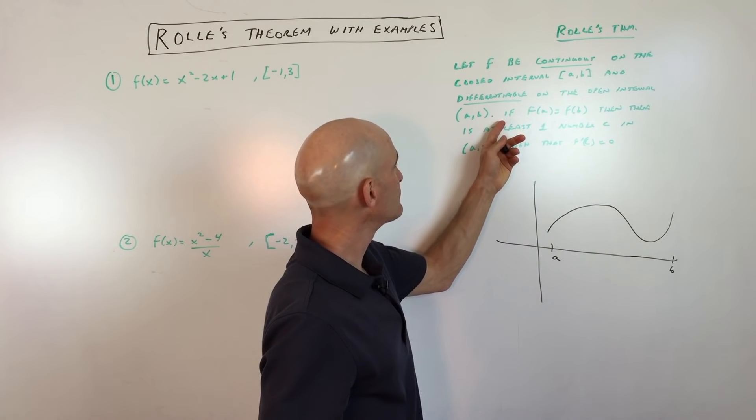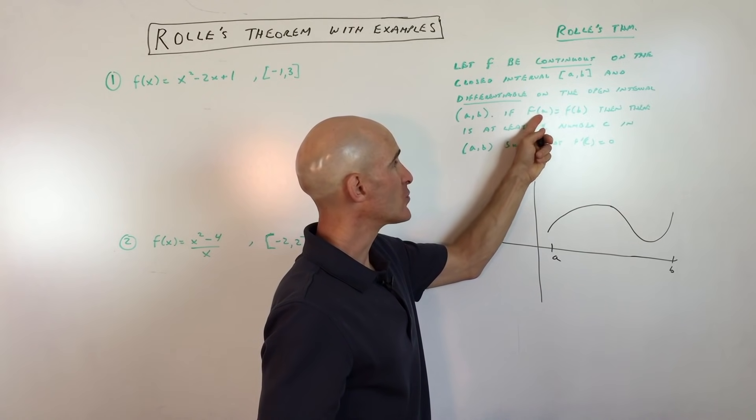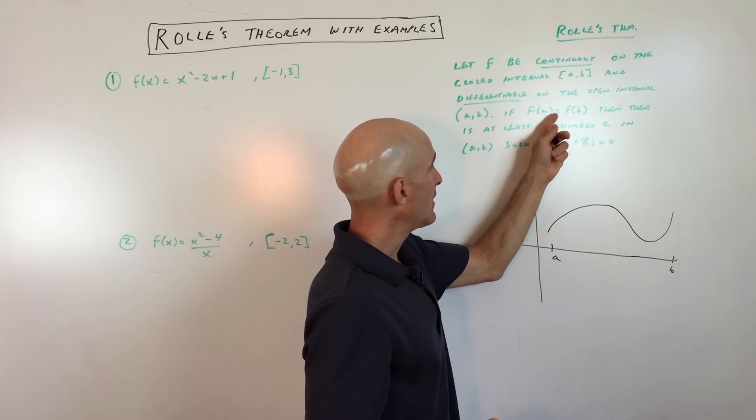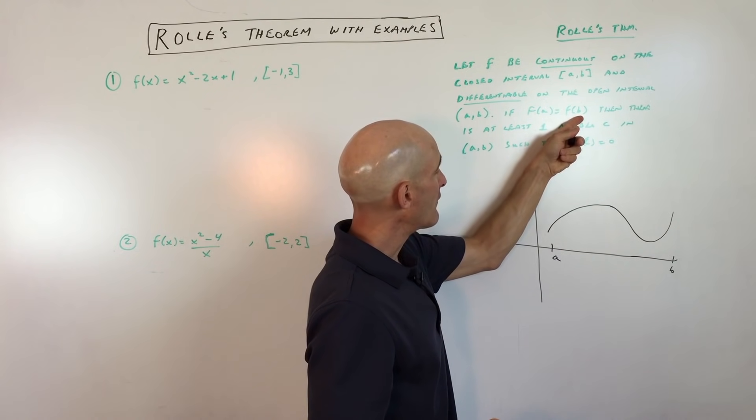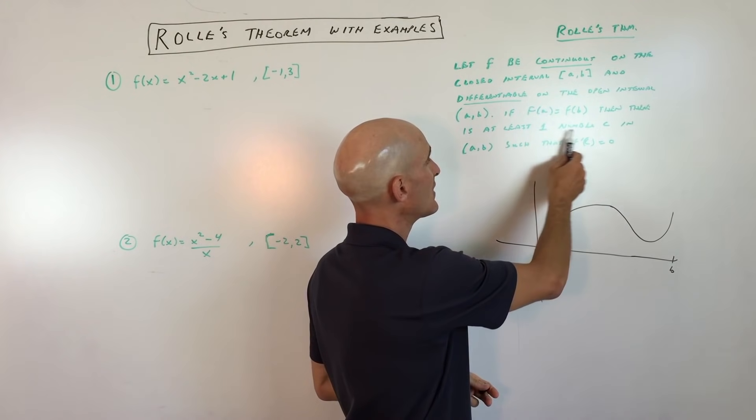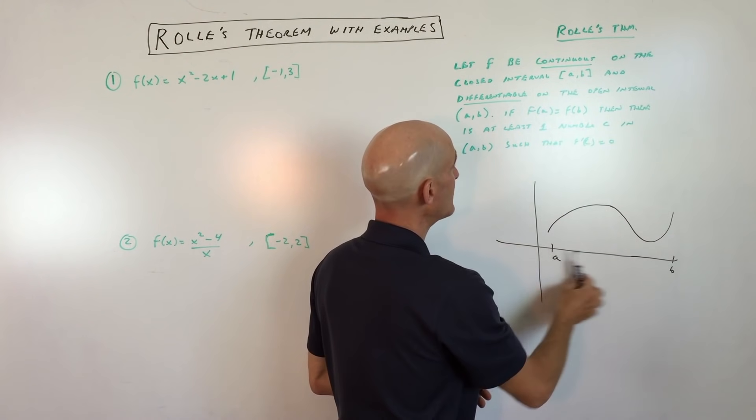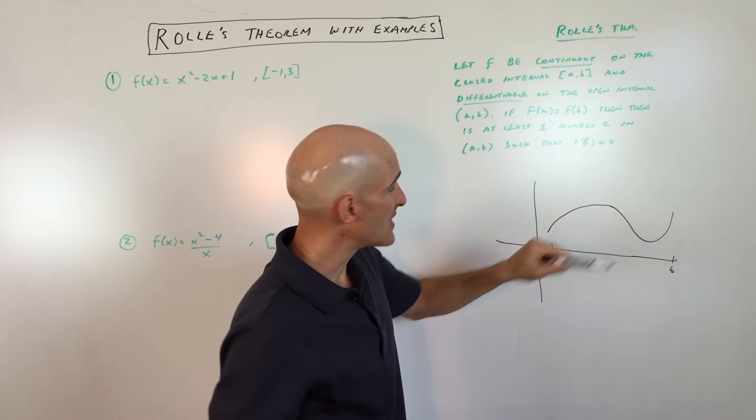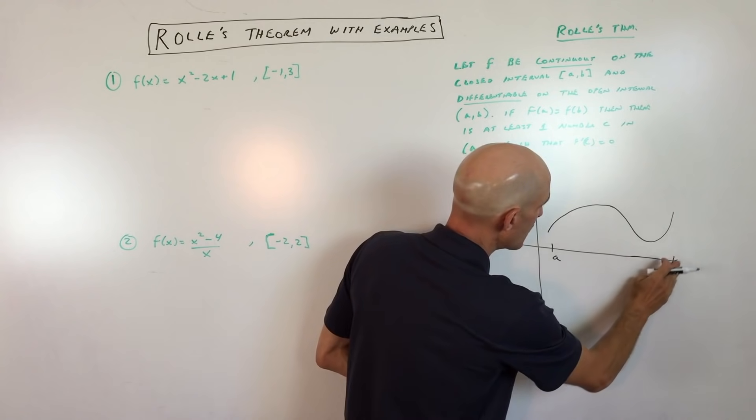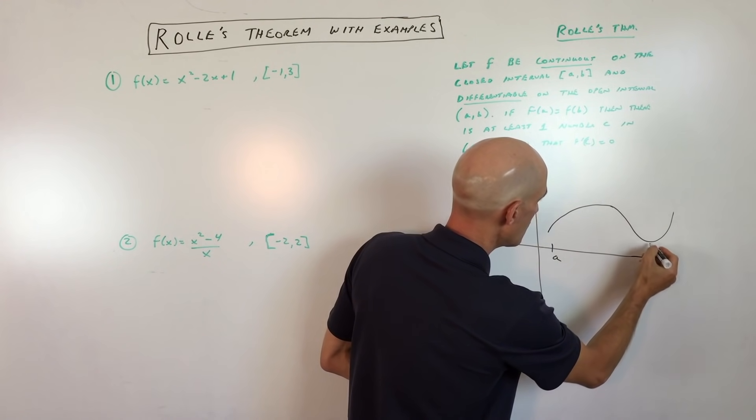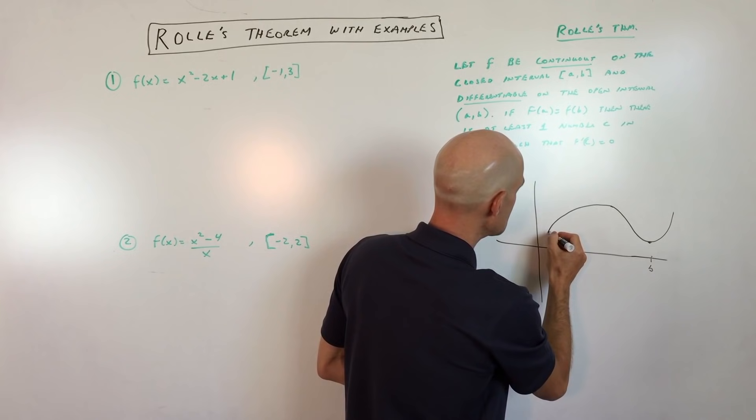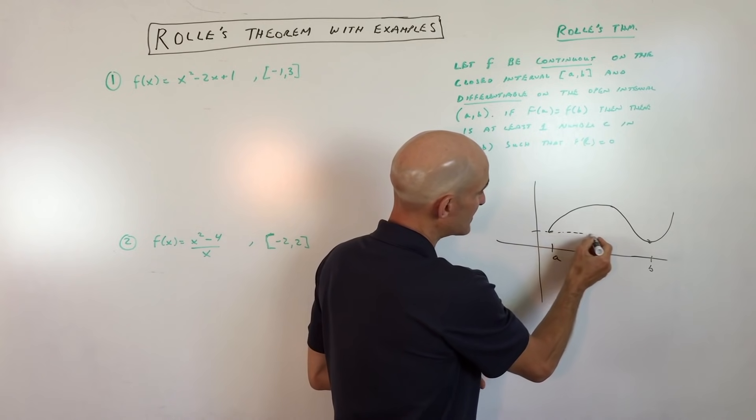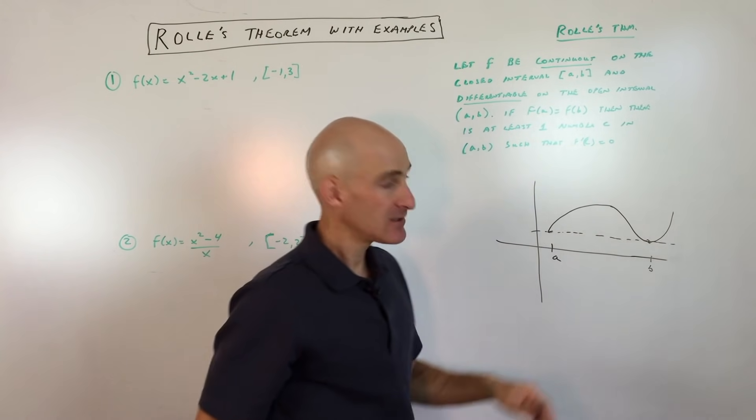And then the last part says that if the y value, so whenever you see f of x, that's really saying the y value or the output at a, if that equals the y value at b, then there has to be at least one number in between a and b, such that the derivative equals zero, meaning that the slope of the tangent line is horizontal. So I'm going to adjust my location of b right here, let's make b right here, and what you can see is that a and b have the same y value, see how they're at the same height.